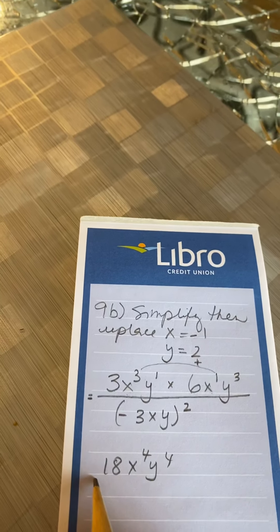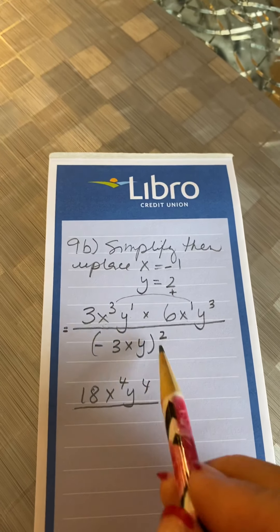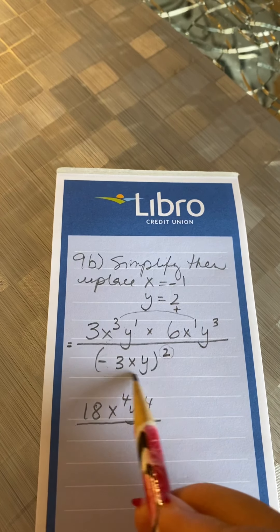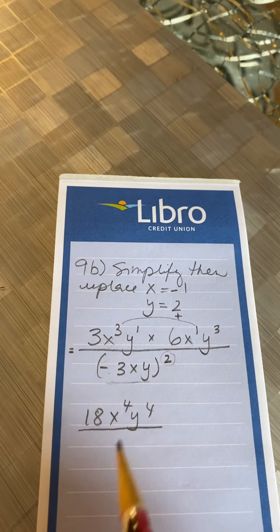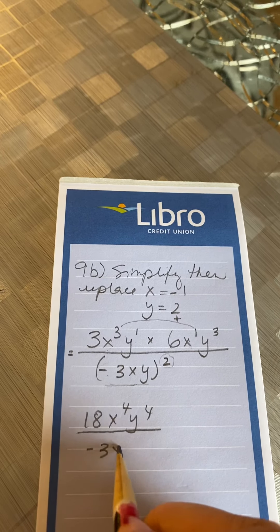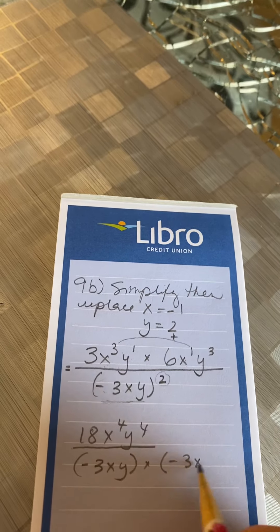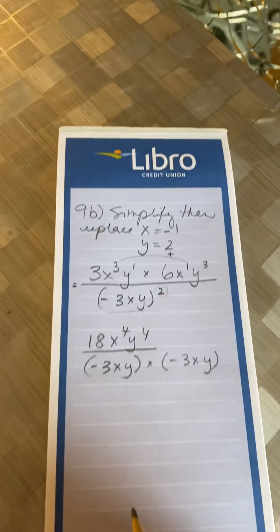So that's my top. The bottom, another way of writing this here, since it has an exponent of 2, it just means that you're taking the same thing and multiplying it by itself. So negative 3xy multiplied by negative 3xy. It's just another way of writing it.